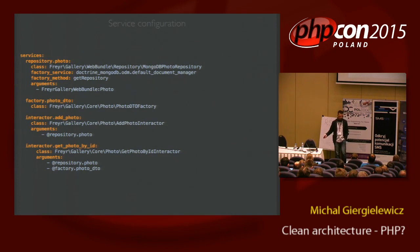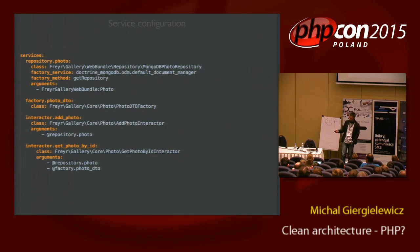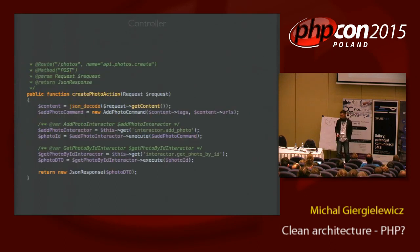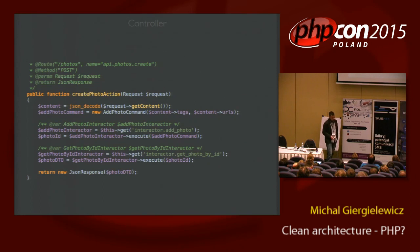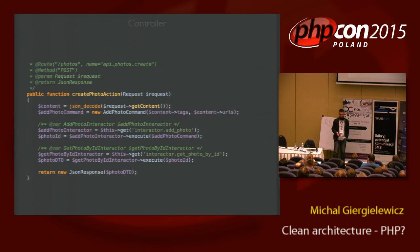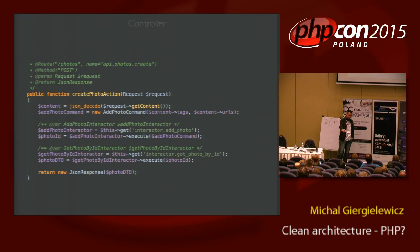I have two interactors: add photo and get photo by ID. In more complex examples, if you have a feature like adding a new photo to my gallery, you will have an interactor called AddPhoto or AddPhotoInteractor. If you have a feature like displaying one photo on the page, you will have an interactor GetPhotoByID or GetPhotoByName. If you have a collection of photos based on tags, you will have an interactor GetPhotoCollectionByTag. You have one interactor that can do one specific thing. This is a very good match with the Single Responsibility Principle.